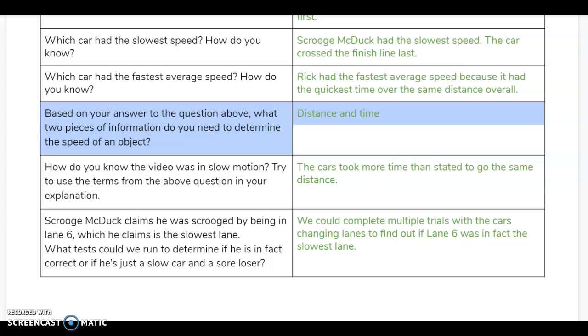Scrooge McDuck claimed he was Scrooge by being in lane six, which he claims is the slowest lane. So what we can do to test if he is correct or if he's just in a slow car is we could complete multiple trials with the cars changing lanes to find out if lane six was in fact the slowest lane. We could run several races and change the cars that are in lane six. If the car in lane six was the slowest car each time, we would know that there's a problem with lane six. If not, then we would know that it was just his car.